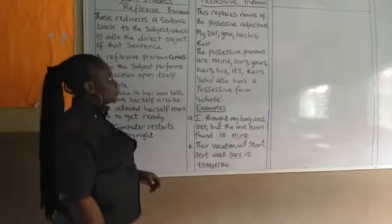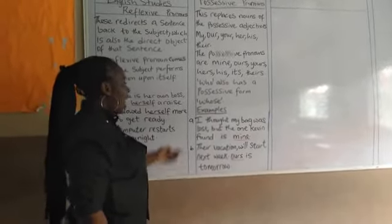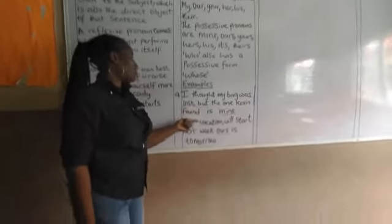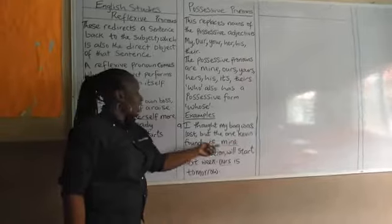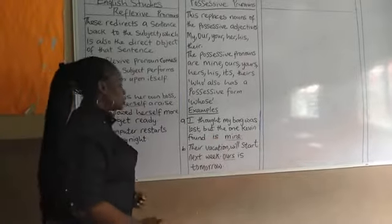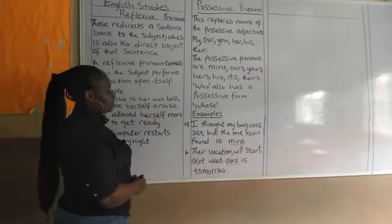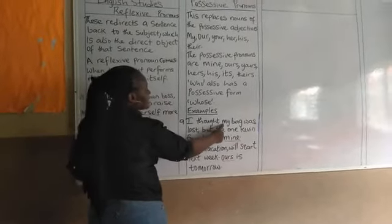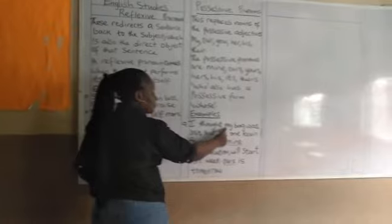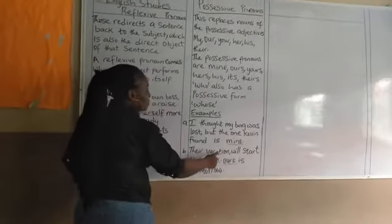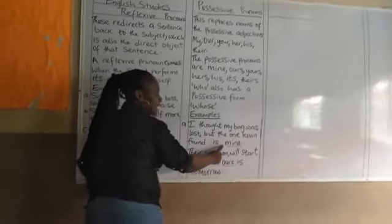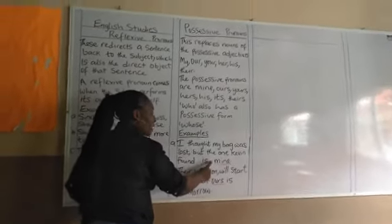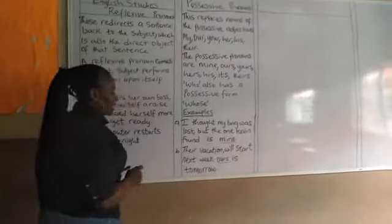Now let's look at examples of possessive pronouns. I thought my bag was lost, but the one Kevin found is mine. You can see 'mine' here — that is the possessive adjective which changed, finally, to a possessive pronoun: 'mine.' So 'mine' in this sentence becomes a possessive pronoun.